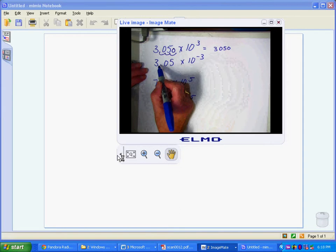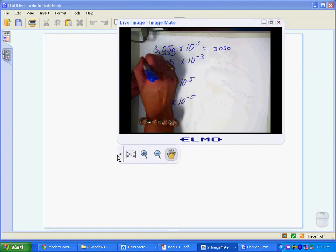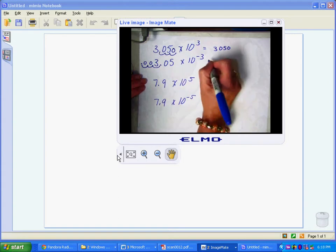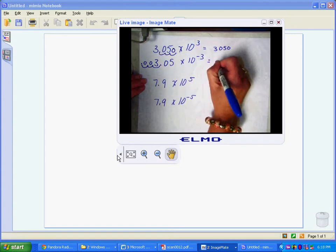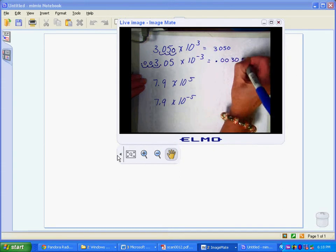So what I can do is move it over this direction three times. So I'm going to move it over 1, 2, 3, and I'm just filling in my holes with zeros. So that equals 0.00305.